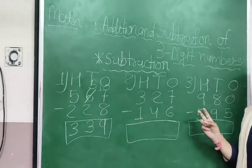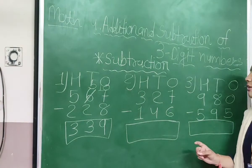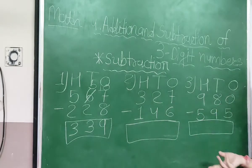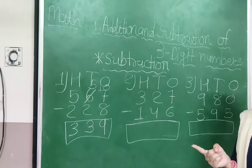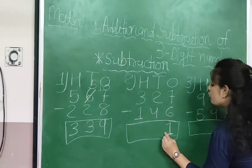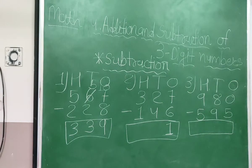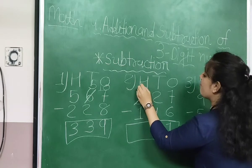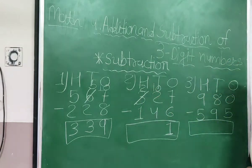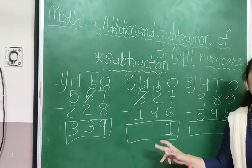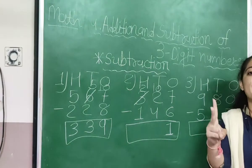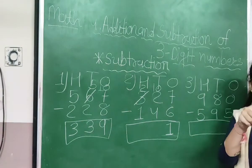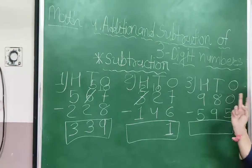327 minus 146. 7 minus 6 — it is possible. Count from 6: 7. So 7 minus 6 is equal to 1. Now 2 minus 4 — it is not possible because 4 is bigger than 2. So I am borrowing from the hundreds. I am cutting 3 and writing 2, and adding 10. So 10 plus 2 becomes 12. 12 minus 4 — count from 4: 5, 6, 7, 8, 9, 10, 11, 12. So 12 minus 4 is equal to 8.